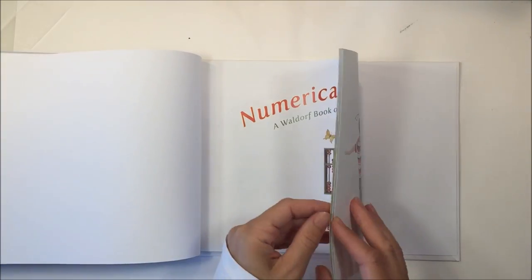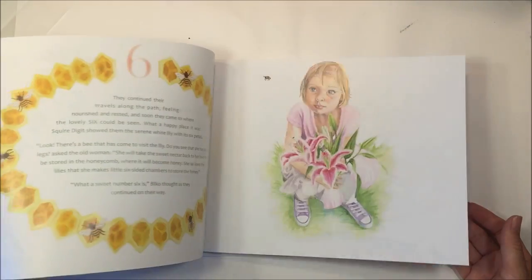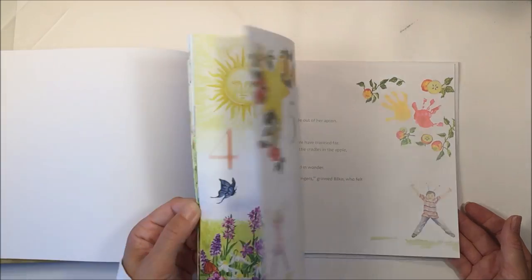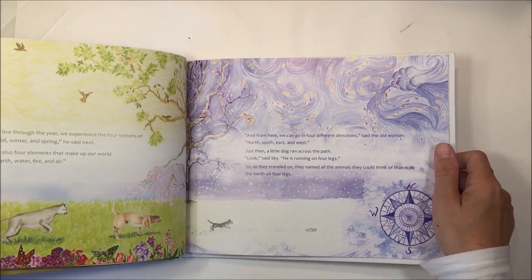The next book is called Numerica and this is The Waldorf Book of Counting. This is a great addition to first grade since the introduction of numbers is taught in first grade. It's also really beautifully illustrated and it has a lovely story.